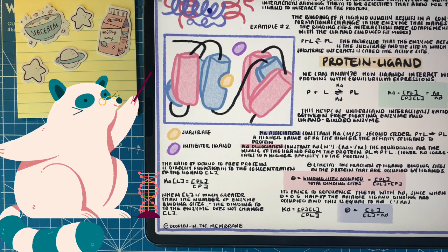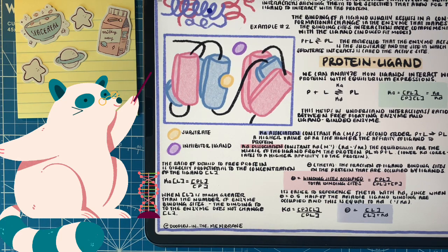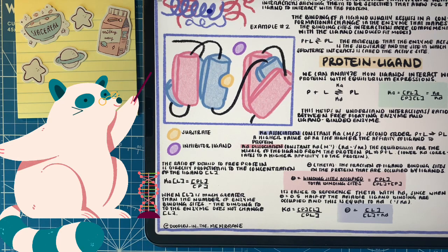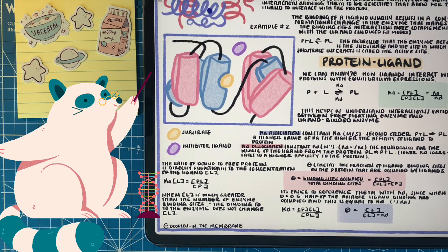Enzymes are not limited to having one binding site and one ligand. They have multiple binding sites, multiple subunits, and multiple ligands that can interact at given times with the protein, so we have to broaden our understanding of interactions between enzymes and ligands. This is where theta comes into play. Theta is the fraction of ligand binding sites on the protein that are occupied at any given time by a specific ligand. To find theta, we divide the binding sites that are occupied over the total number of binding sites for that protein, which is usually found by dividing the concentration of the PL complex by the concentration of the protein.